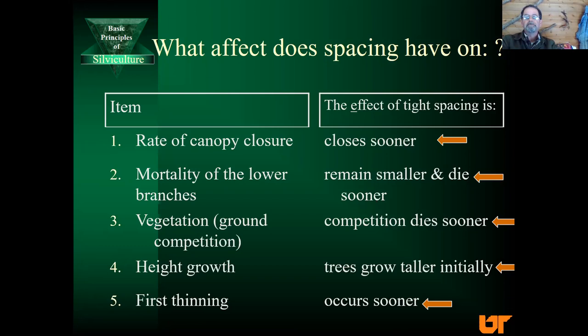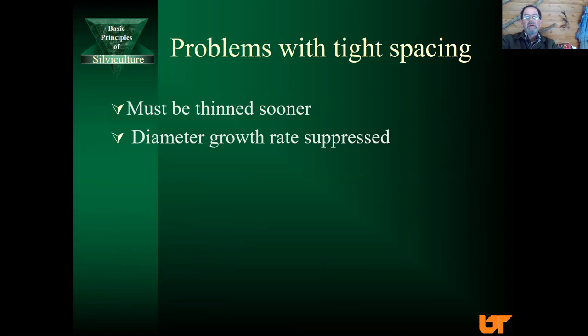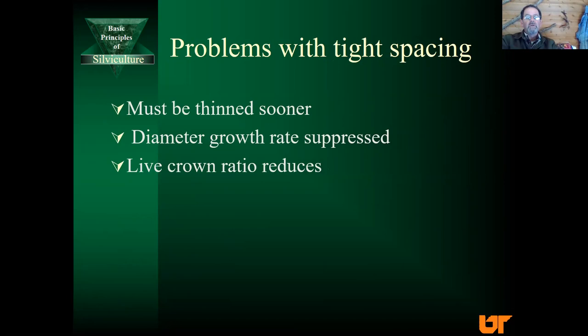There are some problems with tight spacing. As already mentioned, it has to be thinned sooner. Diameter growth rate will be suppressed in tight spacing, so you've got to thin it out in order to keep the growth rate going. The live crown ratio — that proportion of the total tree height that has living branches — will be reduced. The trees can be susceptible to disturbances such as insect and disease problems or weather. In real tight spacing the trees develop a whippy form and can sometimes blow over once you do release them.